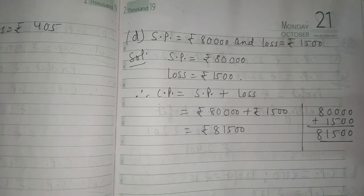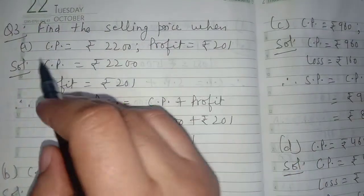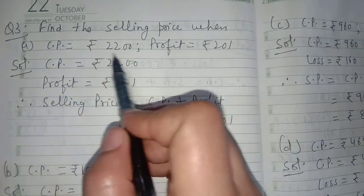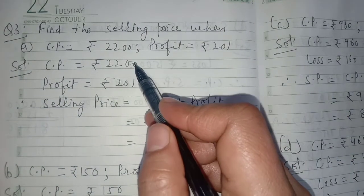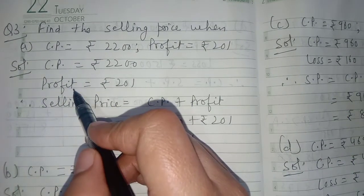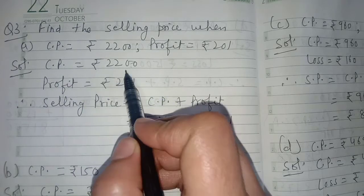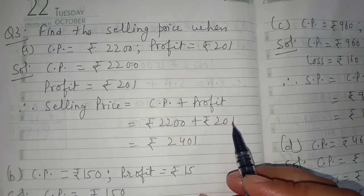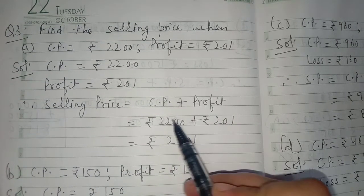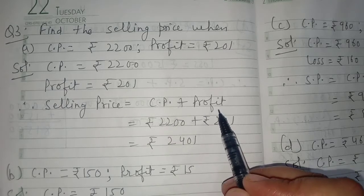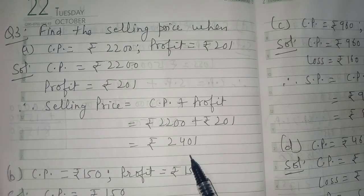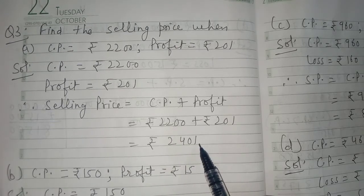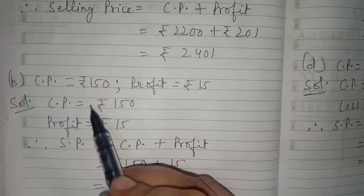Question number three: find the selling price when CP and profit are given. Write down CP rupees 2,200 and profit rupees 201. In case of profit, SP equals CP plus profit. Putting the values and adding them, the final answer is rupees 2,401.